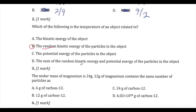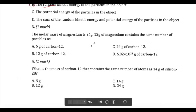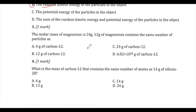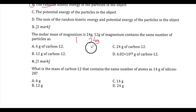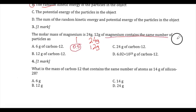Now for question three: the molar mass of magnesium is 24, the same as writing magnesium-24, meaning one mole of magnesium is 24 grams. If one mole is 24 grams, then 12 grams would be half a mole — that is how much magnesium we have in our sample.